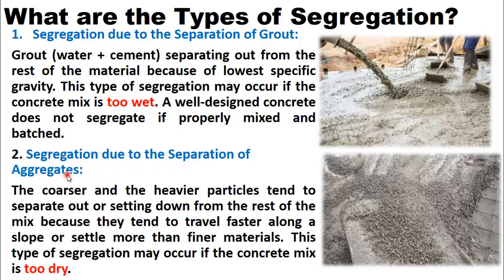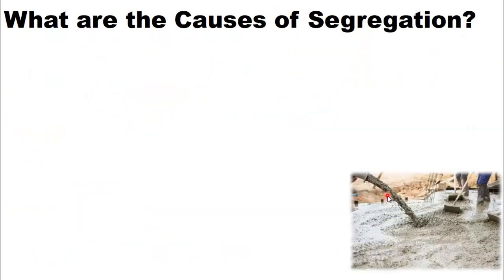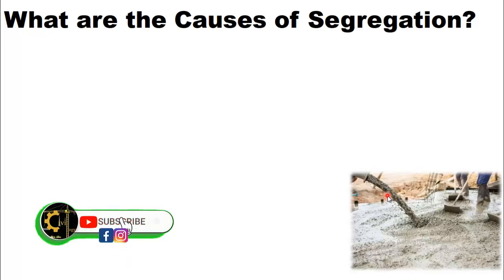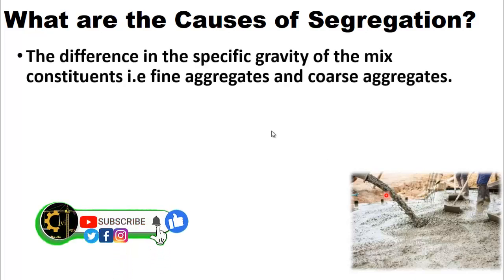The other type of segregation is due to separation of aggregates. The coarser and heavier particles tend to separate out or settle down from the rest of the mix, because they tend to travel faster along a slope or settle more than finer materials. This type of segregation may occur if the concrete mix is too dry, as you can see in this picture.